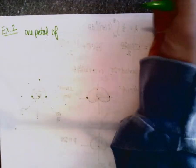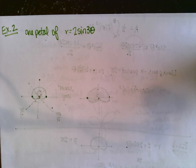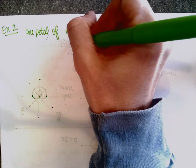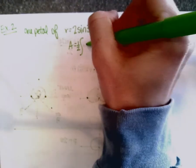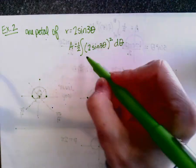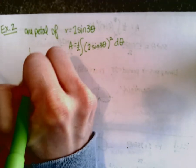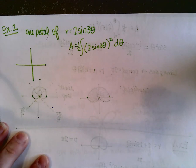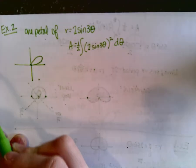The second example says find the area of one petal of r equals two sine three theta. We need to figure out where to start and stop our integral. We know the formula is one-half times the integral of our function squared, but we don't know where to start and stop to get one petal. With roses, each petal starts and stops when r equals zero.